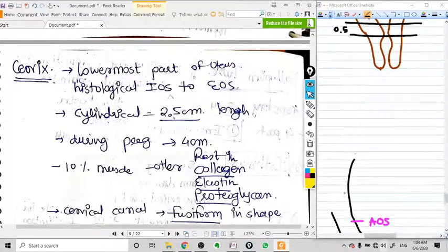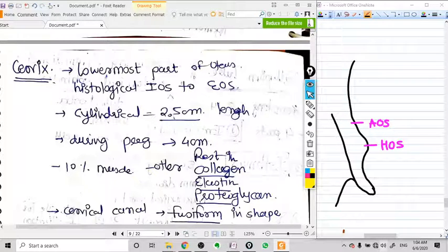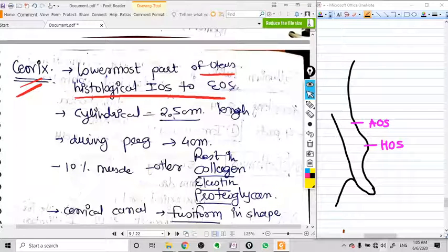Now let's concentrate more on the cervix. This is my one-sided cervix I have shown you. Cervix is the lowermost part of the uterus. There are two different terminologies: histological internal os and anatomical internal os and external os.